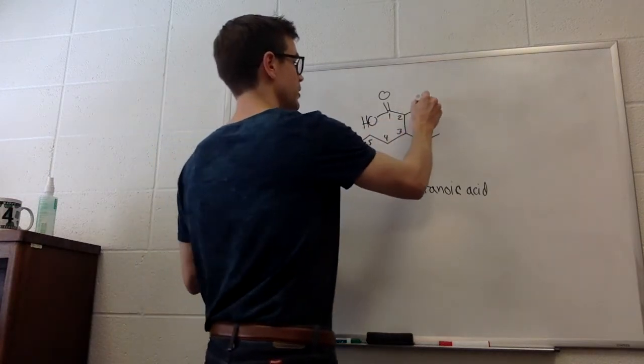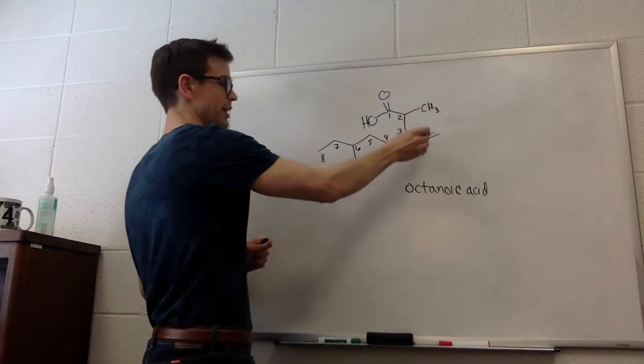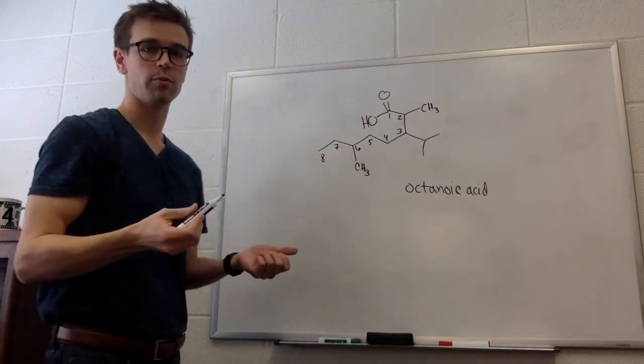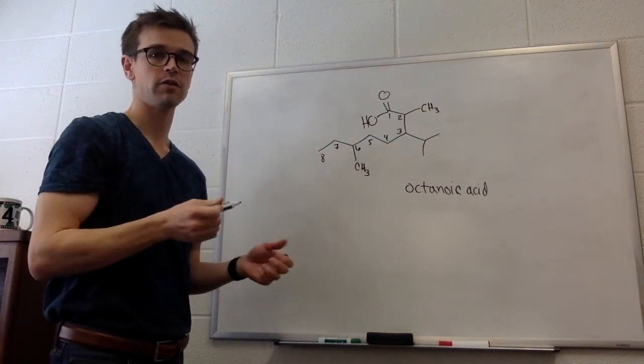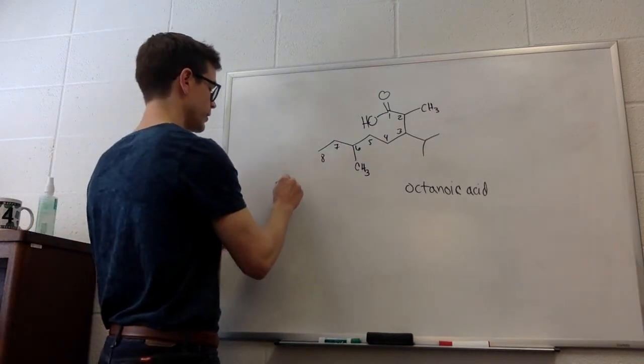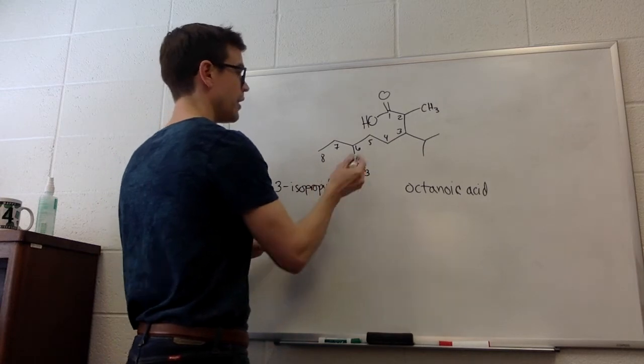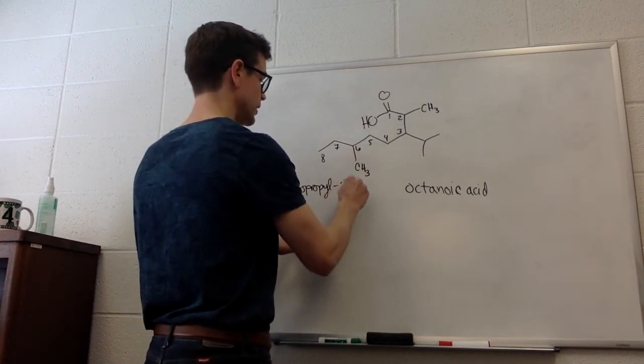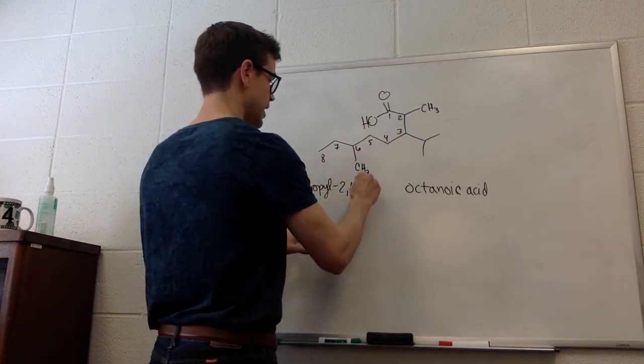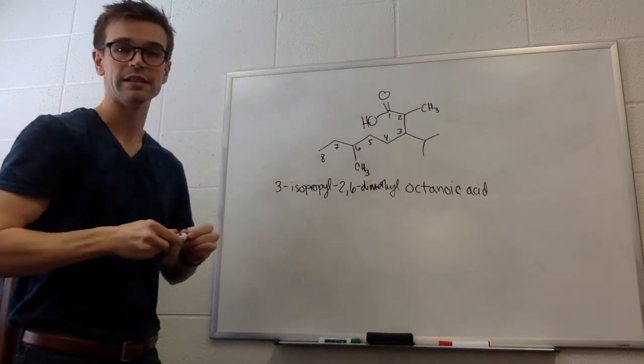So, what about substituents? We have a methyl here, CH3. We have a methyl here, another CH3. And we have an isopropyl there. Isopropyl comes before methyl in the alphabet. So, we're going to put the isopropyl in there first. So, it's 3-isopropyl, and then it's 2-6-dimethyl octanoic acid.